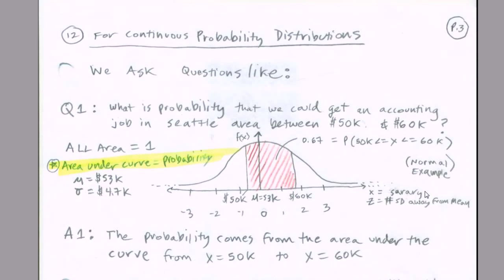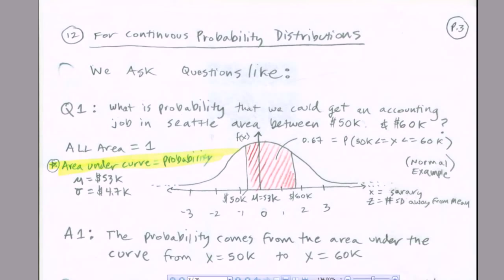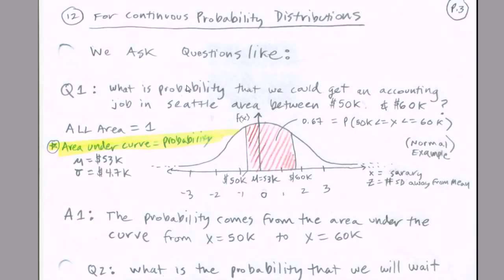Now let's look at three examples of what we're going to be allowed to do, one for each one of our distributions. For our normal or bell-shaped distribution, we're allowed to ask a question like, what's the probability we could get an accounting job in Seattle area between 50,000 and 60,000? The answer will come from the area under the curve, 67%.